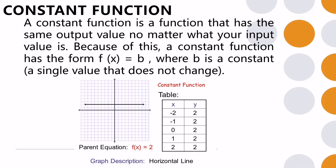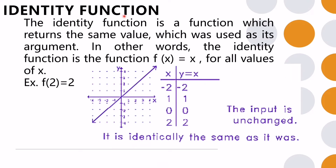Next is the identity function — a function which returns the same value used as its argument. The identity function is f(x) equals x for all values of x. For example, f(2) equals positive 2; the input is unchanged. On its graph, the value of x is the same as the value of y, so y equals x.